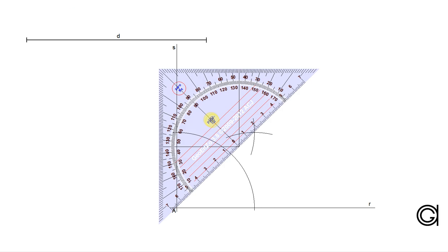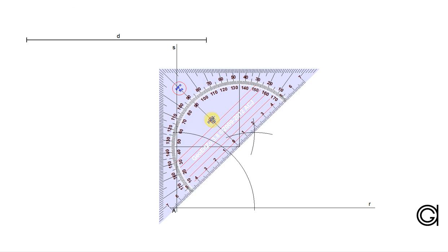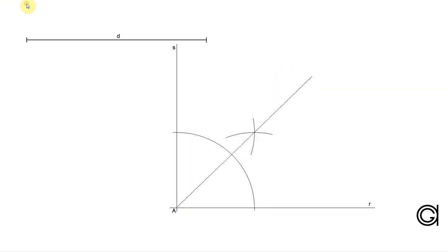Now we have the angular bisector of angle A. We draw a line from vertex A and elongate it as shown here.